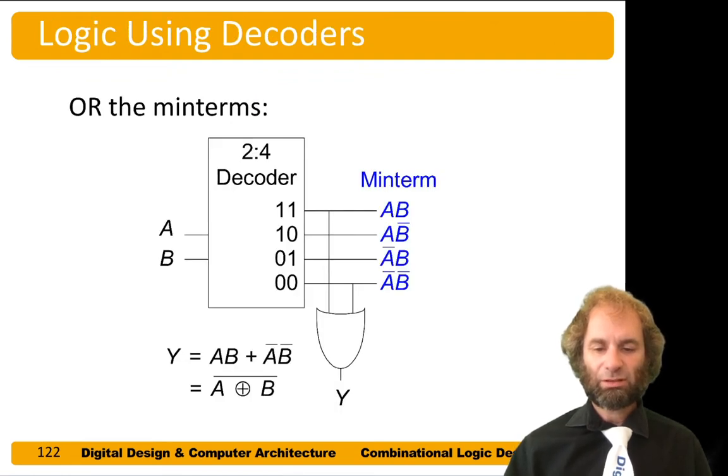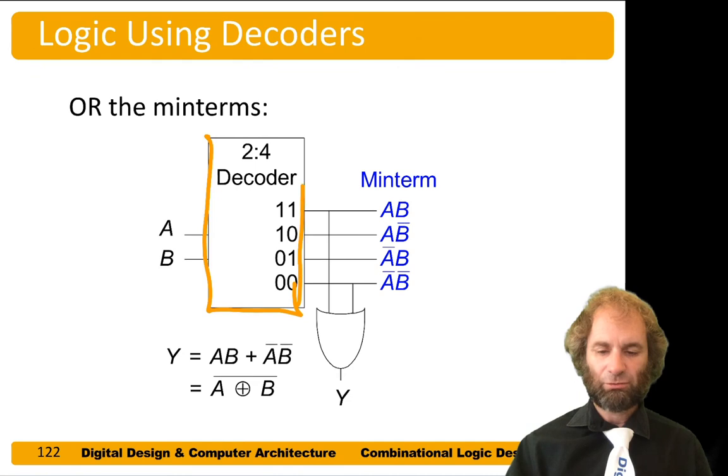We can use decoders to compute all the minterms of a function and then use some OR gates to compute outputs. So this is another way of doing logic. So let's say we had a function of two variables, a and b, such as this function, y equals a and b, or a bar b bar. And remember, this is the same as exclusive NOR, a exclusive NOR b.